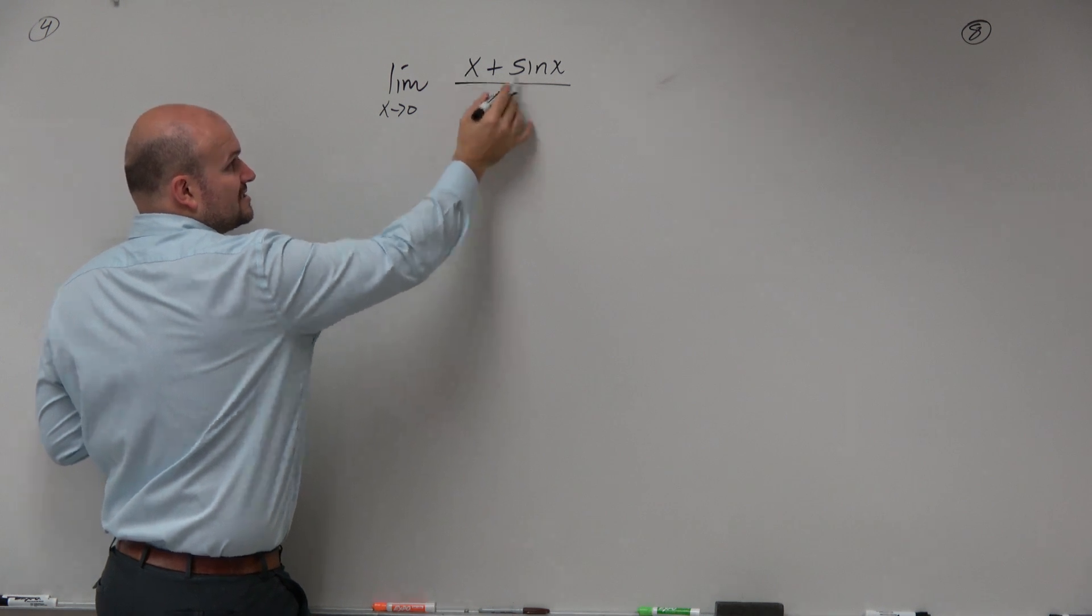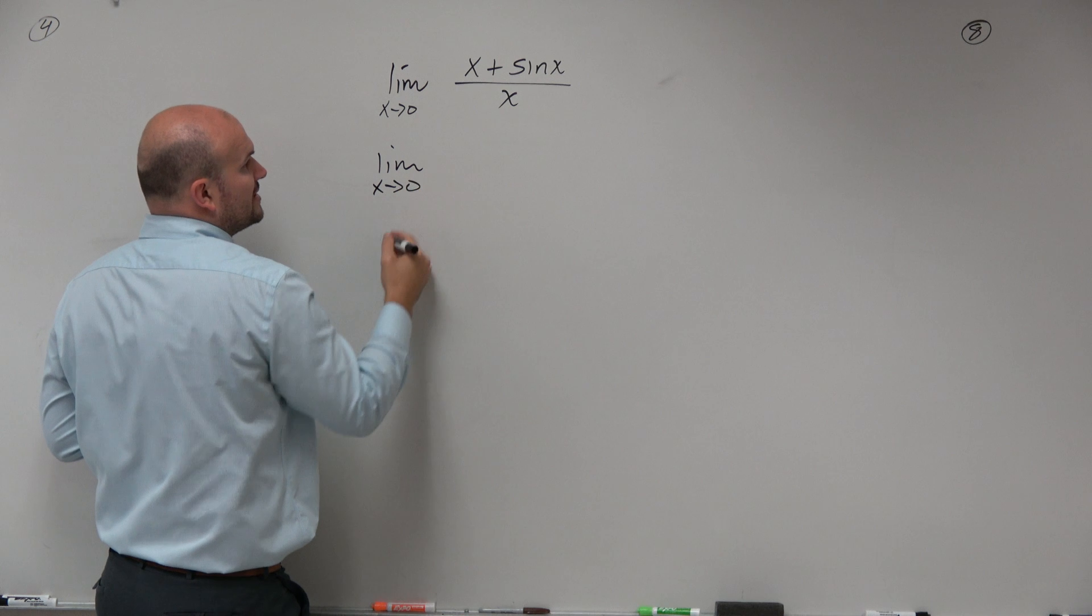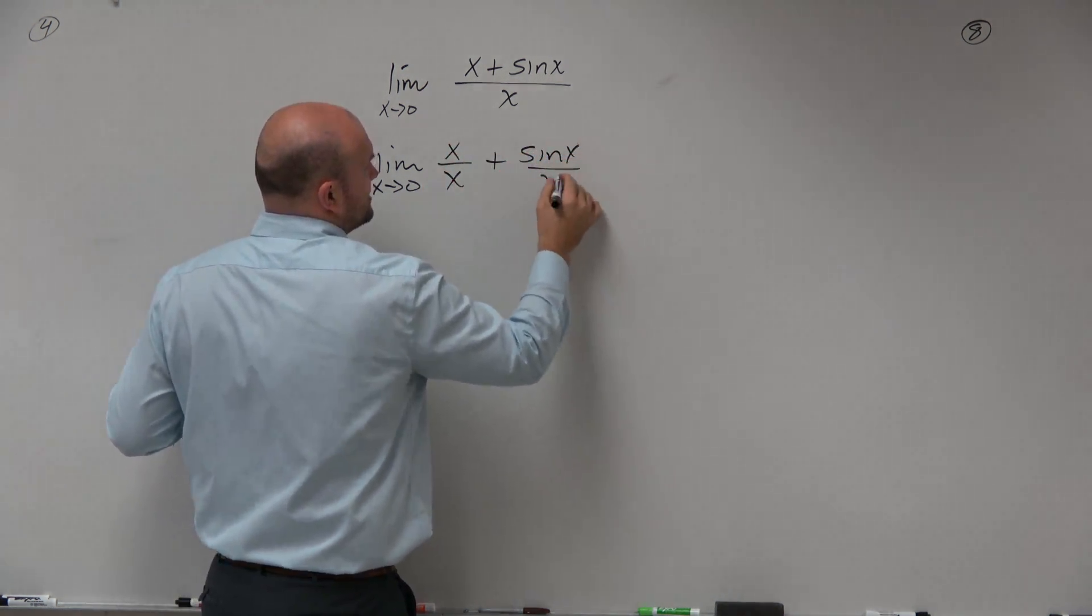We can rewrite the x under the x and rewrite the x under the 1. So we have limit. This actually isn't the one I was planning on doing. So x over x plus sine of x over x.